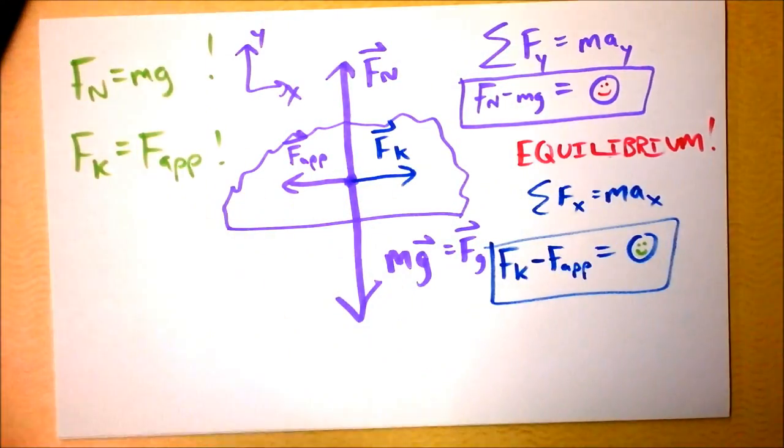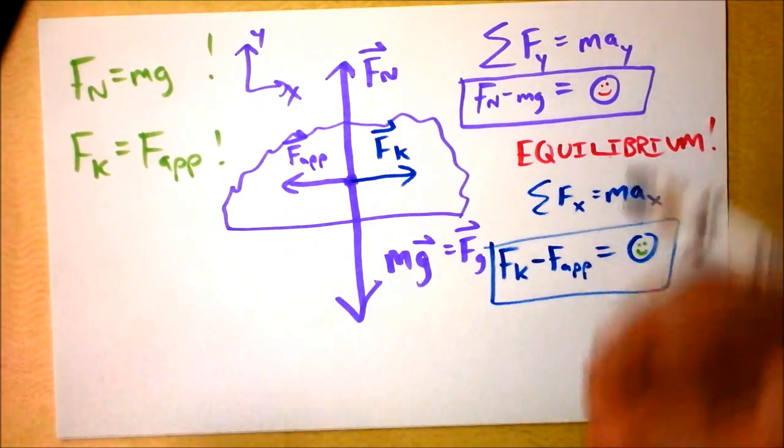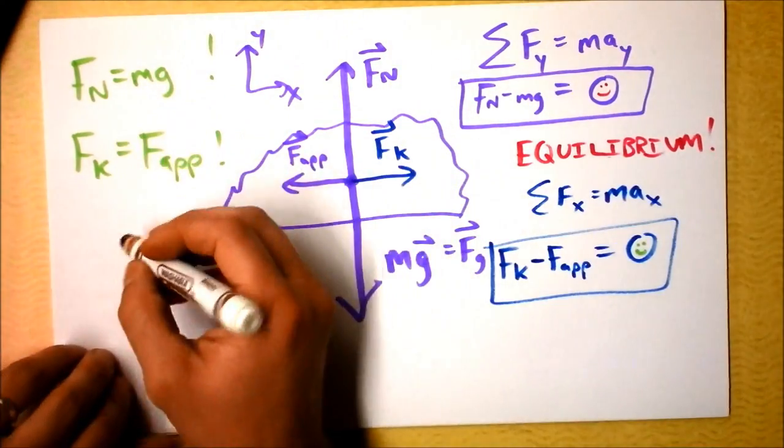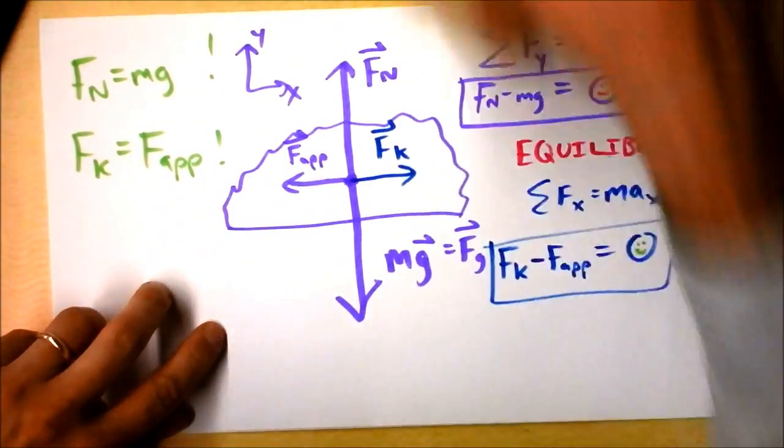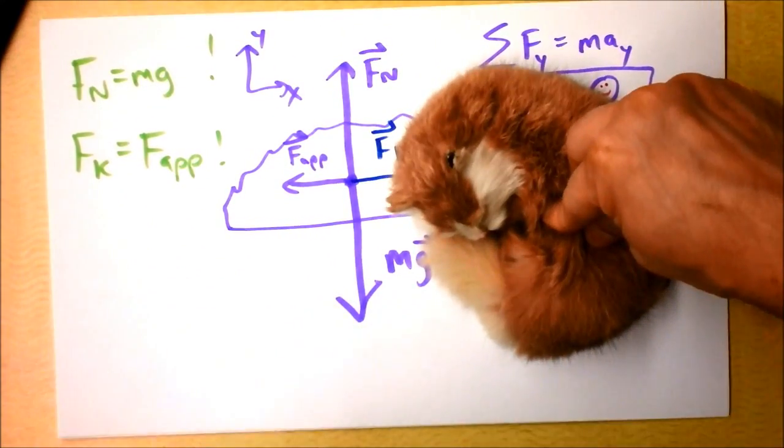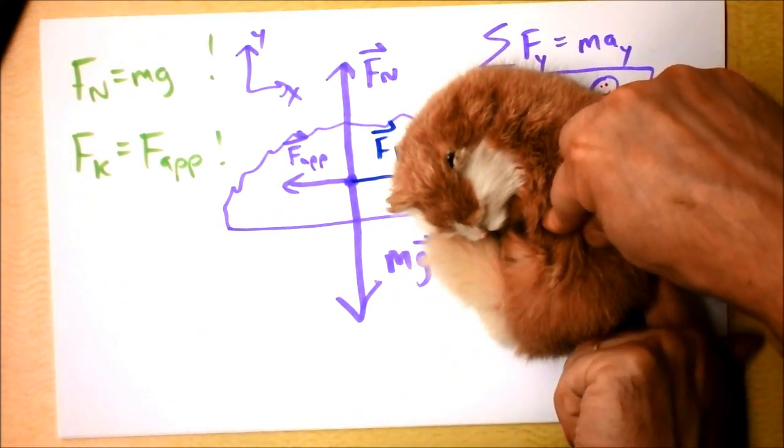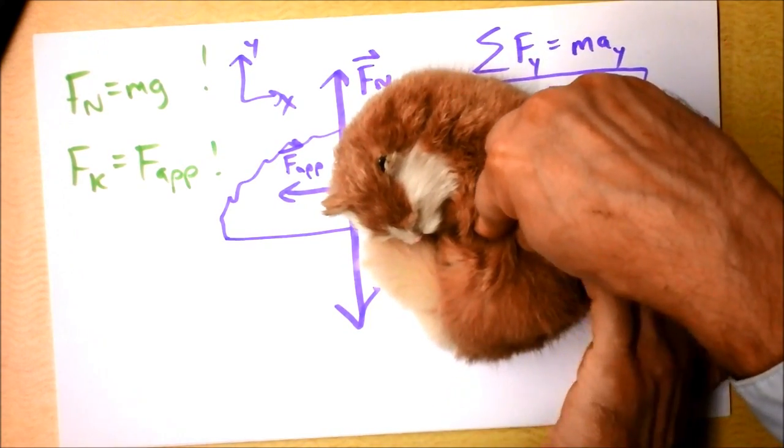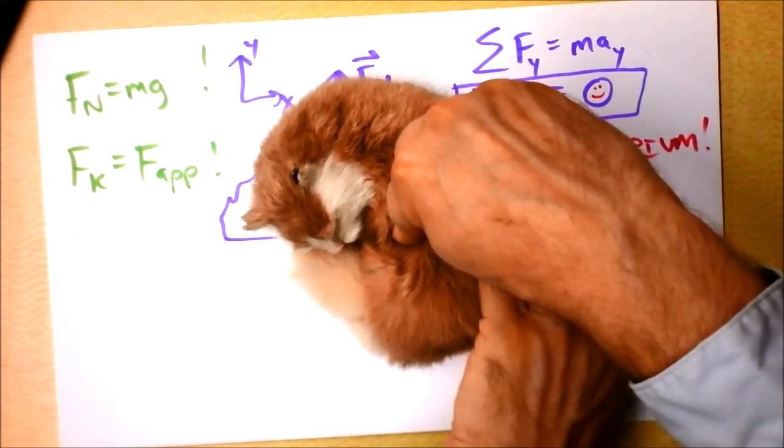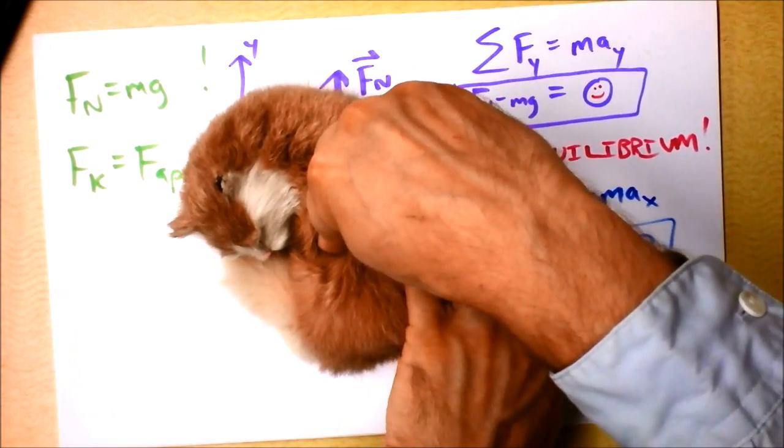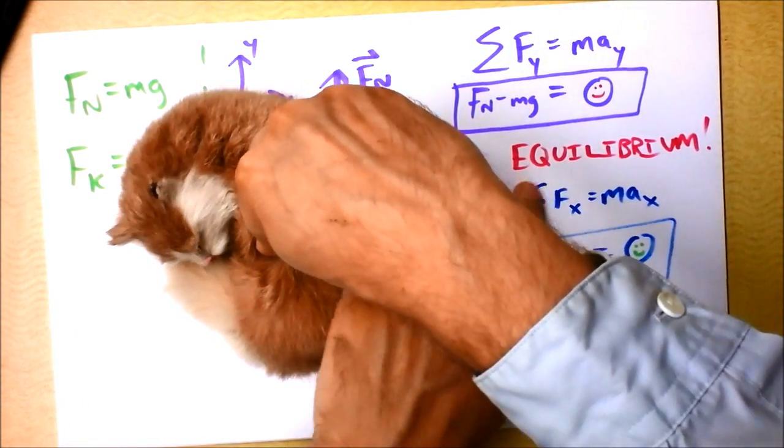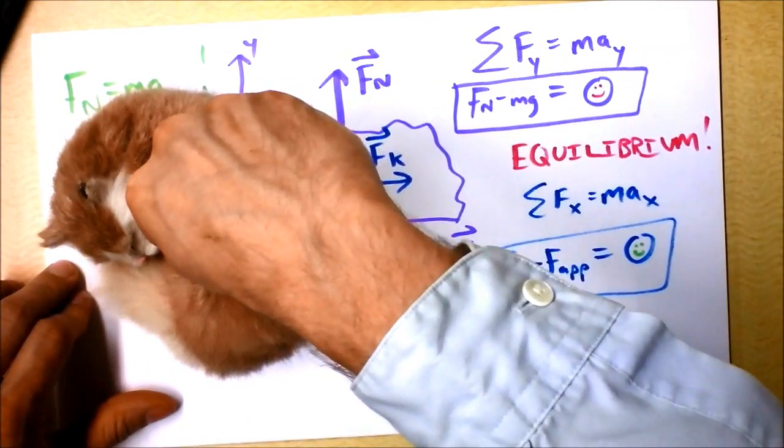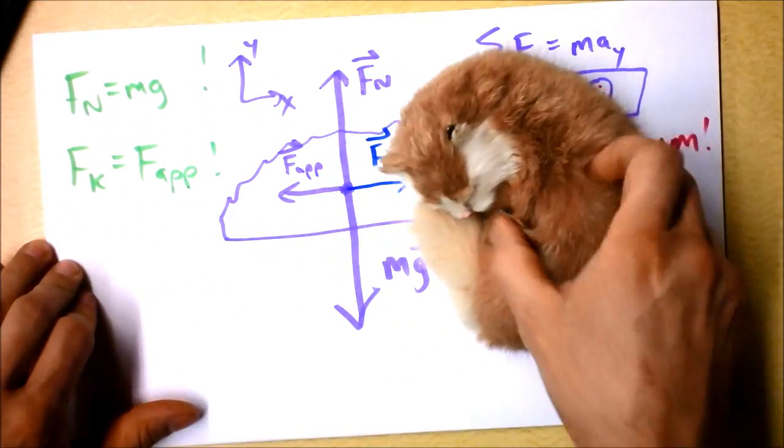Would you believe that if I push down on this cat, it's going to be harder to slide it? It's a lot harder to slide it as I push down on the cat. When I push down on the cat, I'm increasing the force between the paper and the cat, which we could call the normal force. That force of interaction between the paper and the cat is very big.